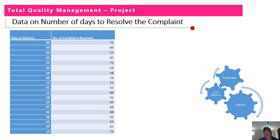Bismillah ar-Rahman ar-Rahim, I am Imran Ahmed. My part in this presentation is the use of a basic TQM tool — the scatter plot. In this slide, we can see two columns: number of days on the left versus number of complaints resolved. In the first row, we can see that against 60 days, only 51 complaints have been resolved. We need to optimize this data to reduce the number of days against complaints so we can improve quality and reduce the overall loss.